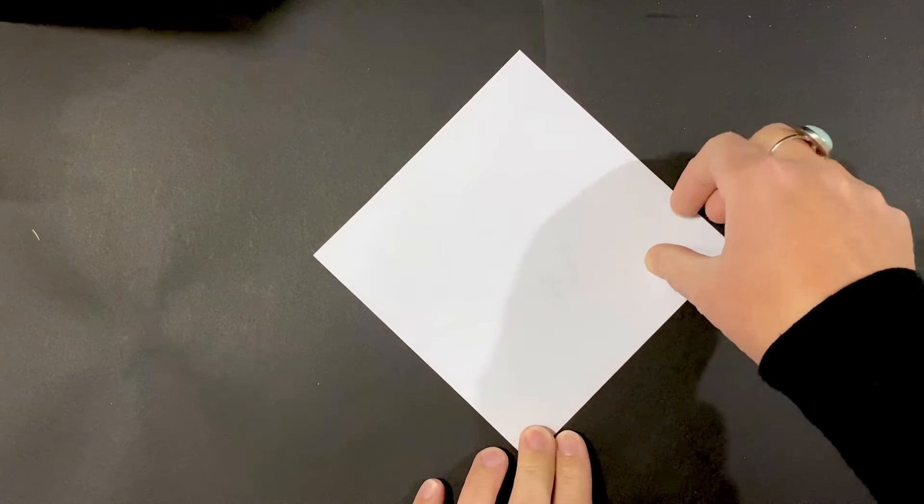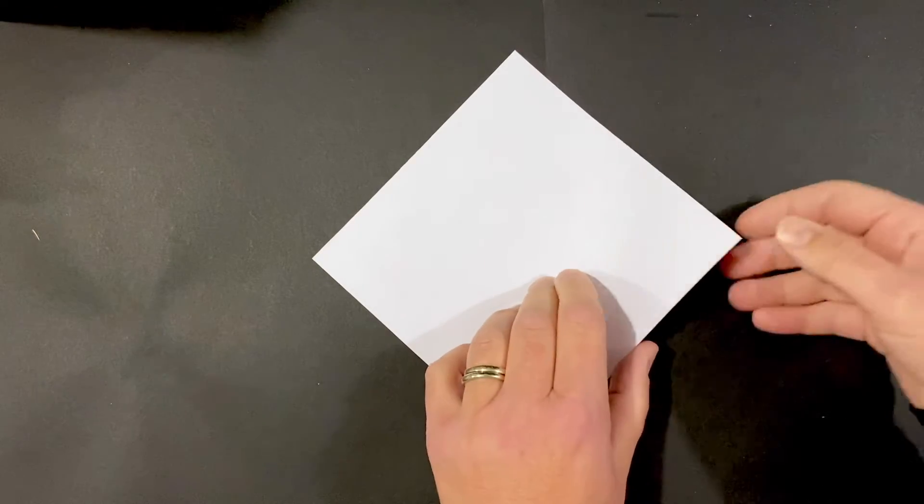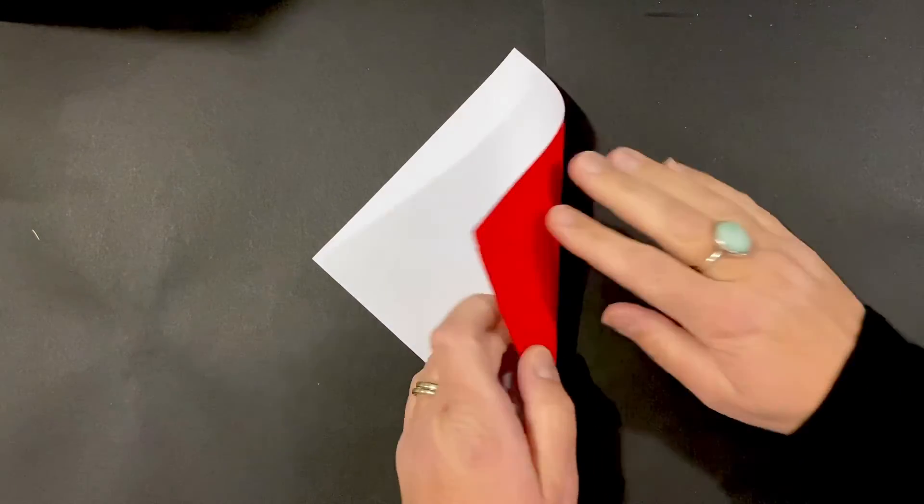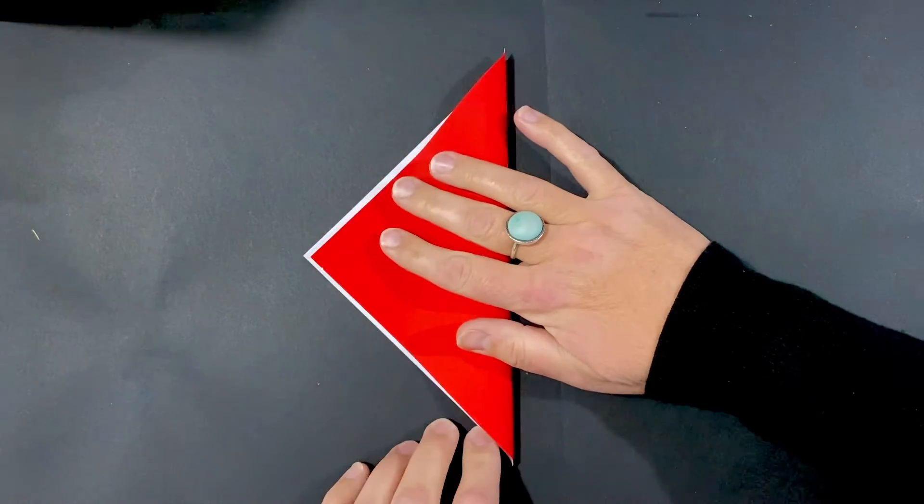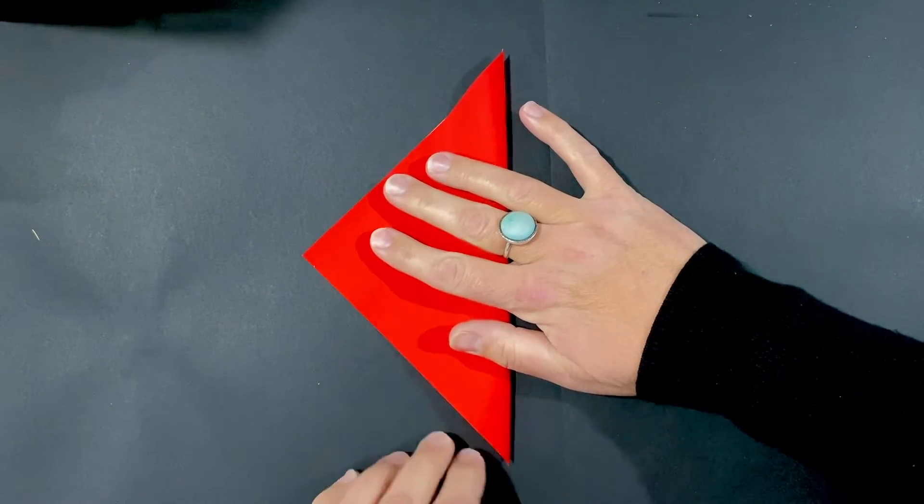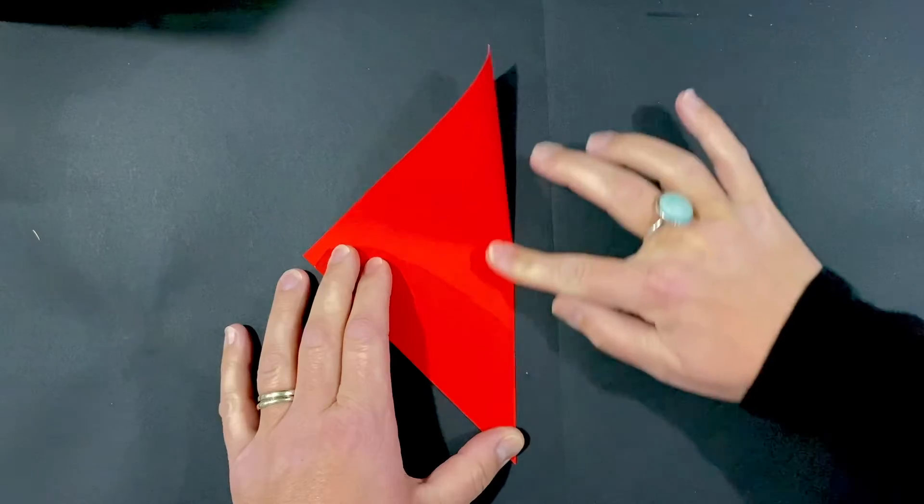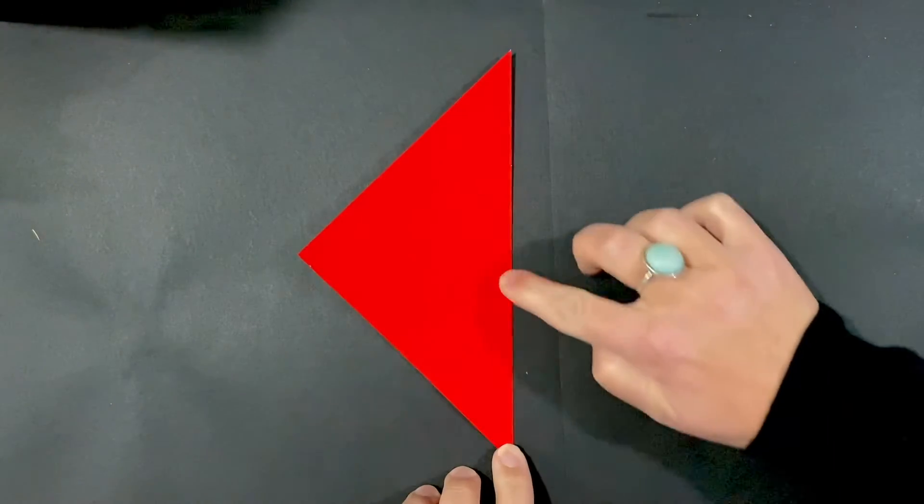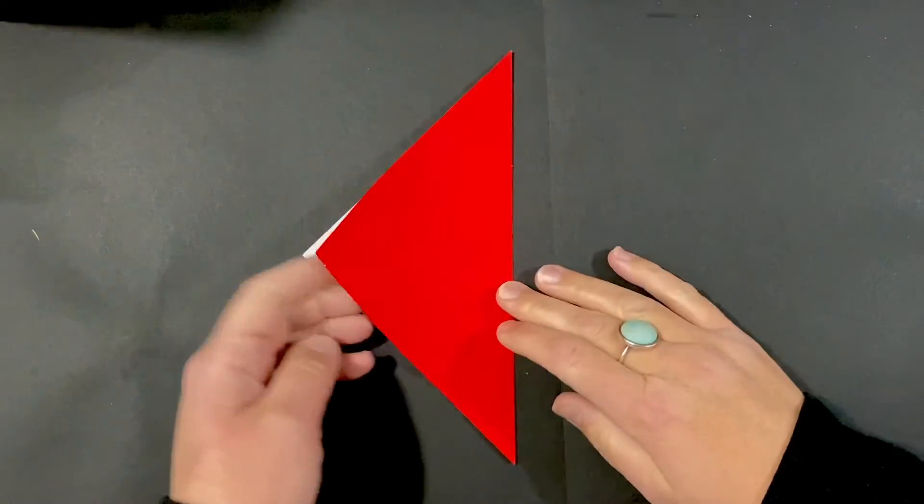We're going to take the right hand side, this corner right here, and we're going to fold it over to the left hand corner, and that will make a triangle. Give it a really good crease. Next, you're going to unfold what you just folded.